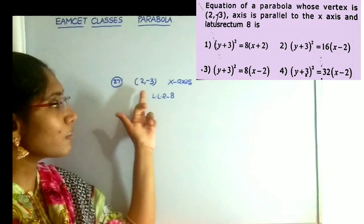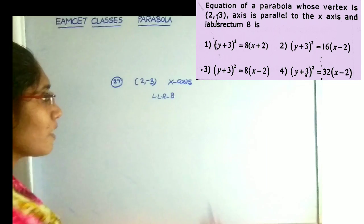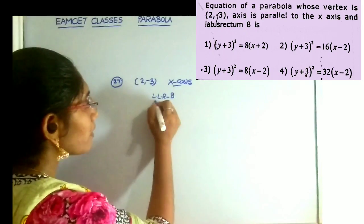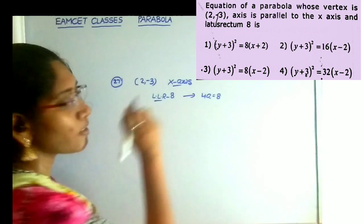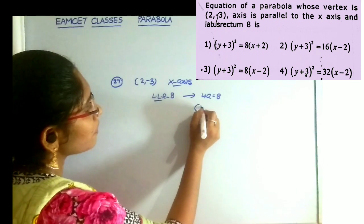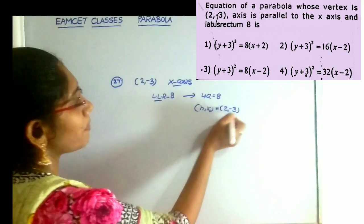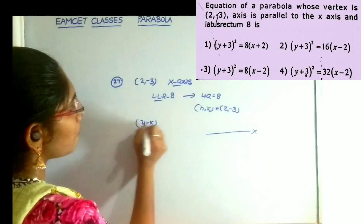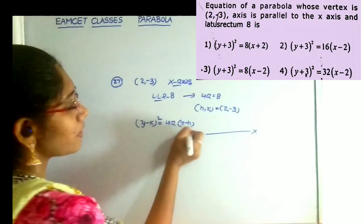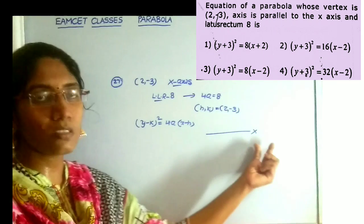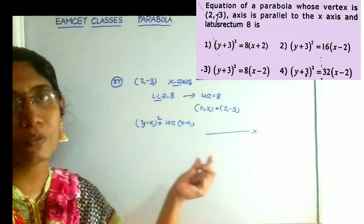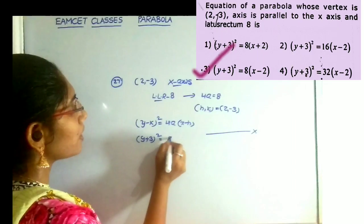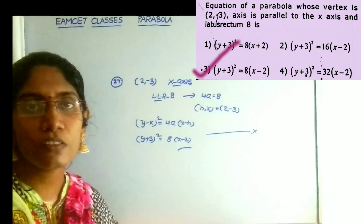The next question: find the equation of the parabola whose vertex is 2 comma minus 3, whose axis is parallel to the x-axis, and length of the latus rectum equals 8. Length of latus rectum equals 8 means 4a equals 8. Vertex 2 comma minus 3 means h comma k equals 2 comma minus 3. Since the axis is parallel to the x-axis, the formula is y minus k whole square equals 4a into x minus h. Substituting: y plus 3 whole square equals 8 into x minus 2. This is the answer and the third option.